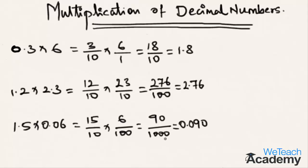Now the decimal point comes before three places, so the result is 0.090. If you observe all these examples, the decimal places in the result equal the total decimal places in the question. In the first example, there is one digit after the decimal point, so the result also has the decimal point before one digit from the left.